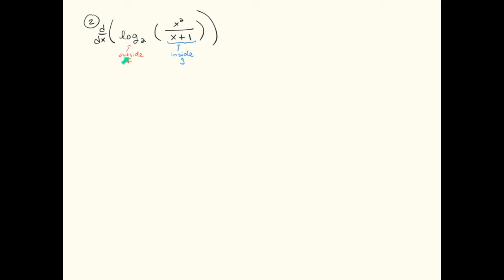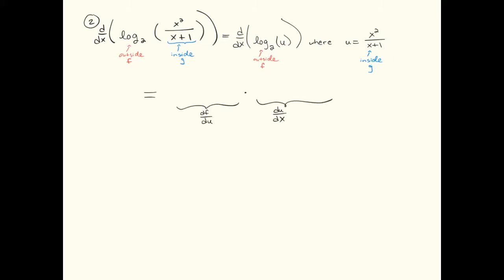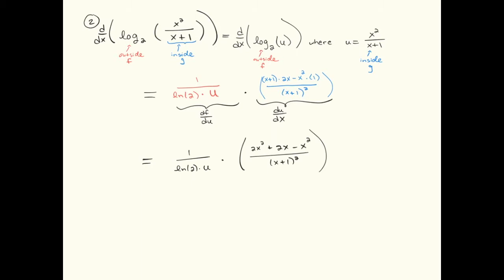Let's do another example. Here the outside function is log base 2, and the inside function is x squared over x plus 1. We're going to take the entire inside function and replace it with a u, writing on the side u is equal to x squared over x plus 1. The chain rule says first I take the derivative of the outside function f with respect to u, then multiply times the derivative of the inside function with respect to x. The derivative of log base 2 is 1 over ln of 2 times u. The derivative of the inside function requires a quotient rule — low d high minus high d low over the square of what's below. I've got a little simplifying to do, foiling in the numerator and then simplifying.